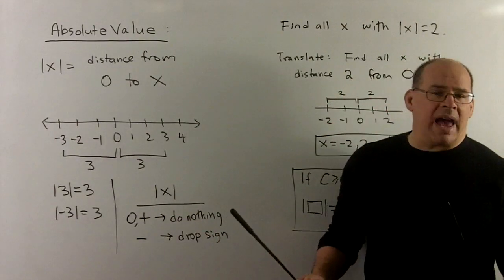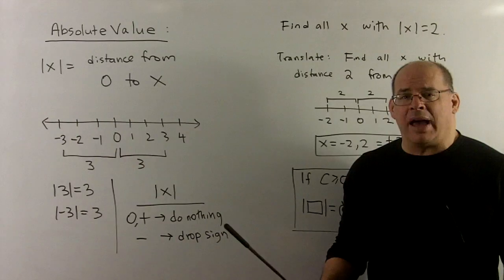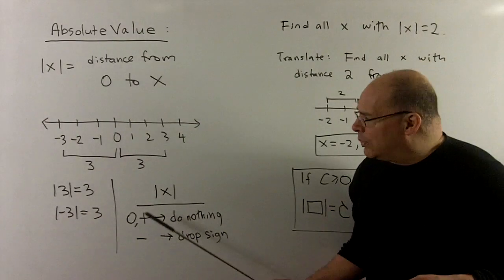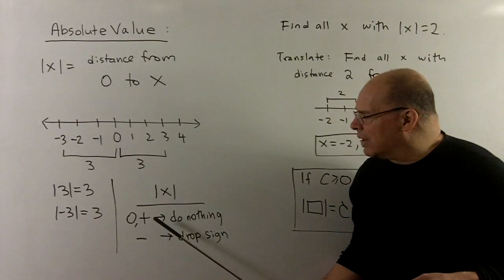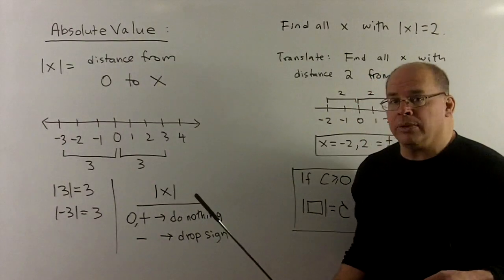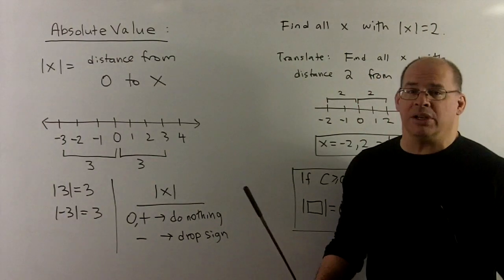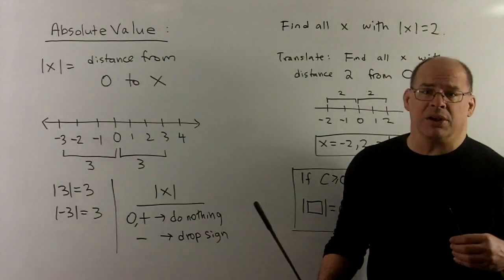And you can see the mechanics for actually calculating absolute value as follows. If we have 0 or a positive number, we do nothing. The absolute value of 0 is just 0, and distance from 0 to 0 is 0.